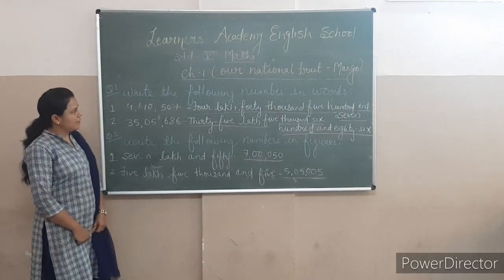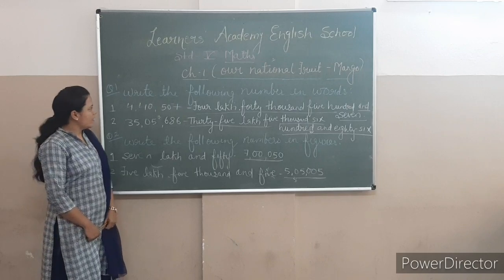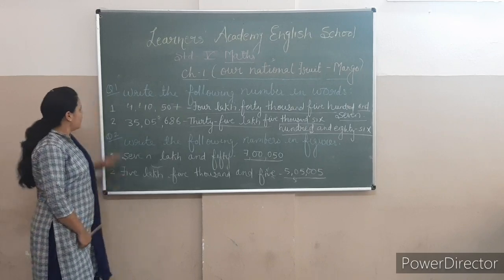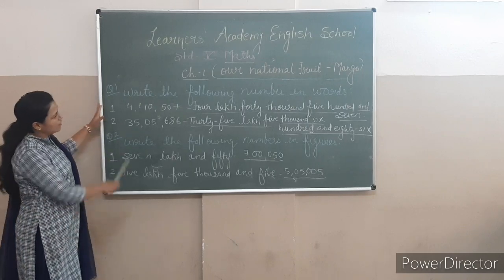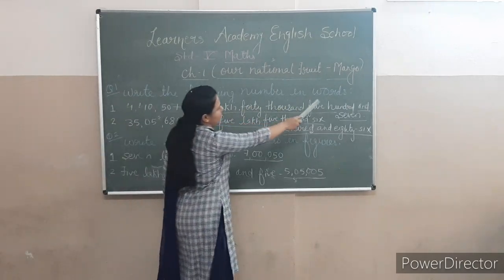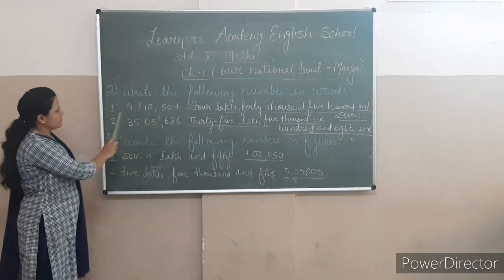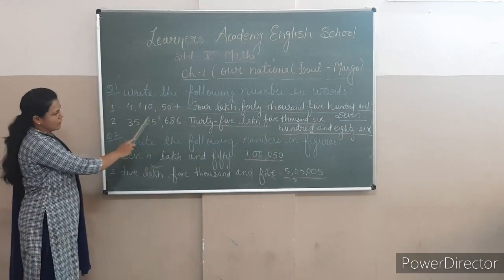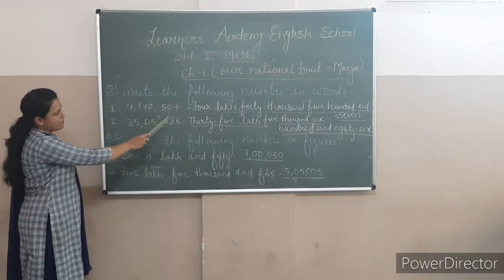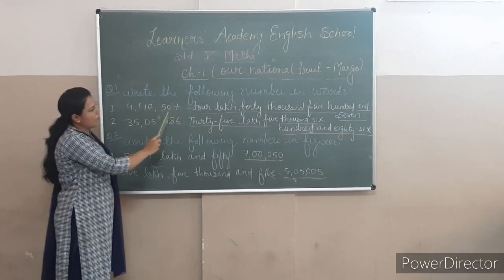You can write the following numbers in words. So I will give you the example. Question number 1: write the following numbers in words. First, 4,40,507.